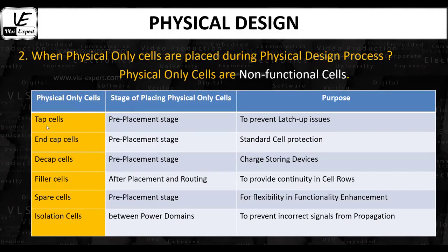Tap cells, also known as well tap cells, are placed during the pre-placement stage of the physical design process. The pre-placement stage occurs after the macro placement and power rail creation. Tap cells are strategically placed at regular intervals in each cell row of the standard cell placement.